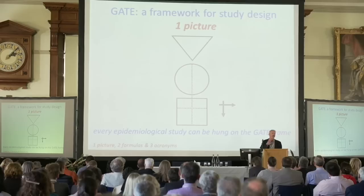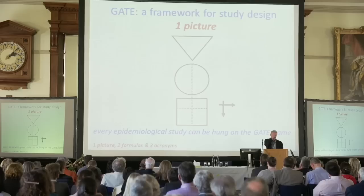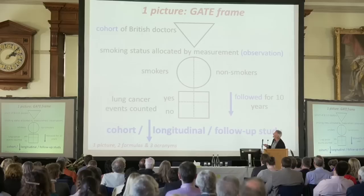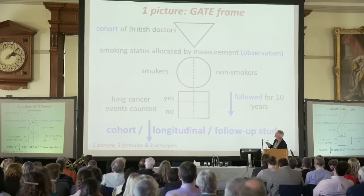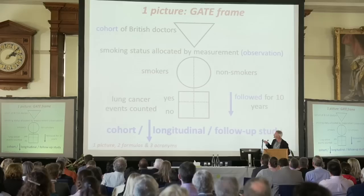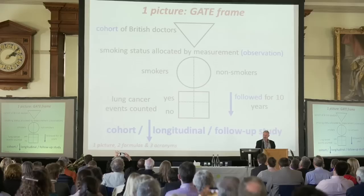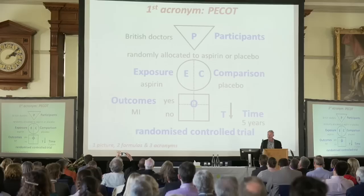Every epidemiological study can be hung on this picture. Whenever I read a paper, I draw this gate frame on every page and fill it in as I go through. Here's an example — a famous study: British doctors allocated by measurement to smokers and non-smokers. That's an observational study. There are the two groups: smokers and non-smokers. They were followed initially for 10 years, and some got lung cancer and some didn't. A longitudinal, incident study. You can teach incidence with this arrow — that's the standard design of a cohort study.